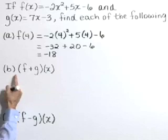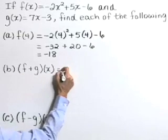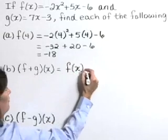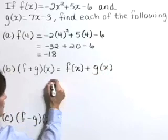Moving to part B now, we'd like to find f plus g of x. Let's go ahead and write that as f of x plus g of x. So we're going to add these two functions together.